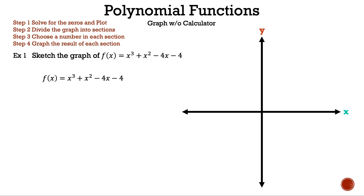Let's write down our equation. We can already graph one point — the y-intercept, (0, -4). It is the only number without an x next to it. Now let's find the zeros. Since we have four terms, it is best to try factoring by grouping. We can factor an x² from the first two terms and a negative 4 from the last two terms.